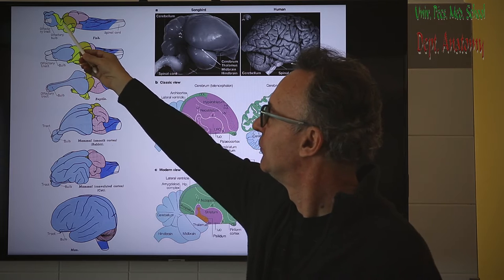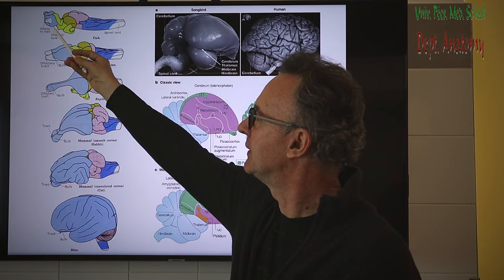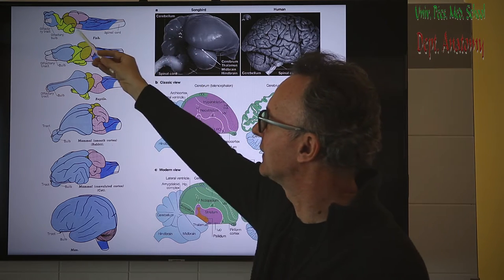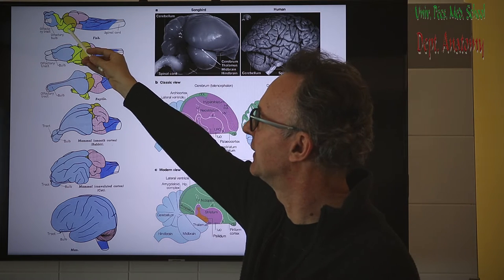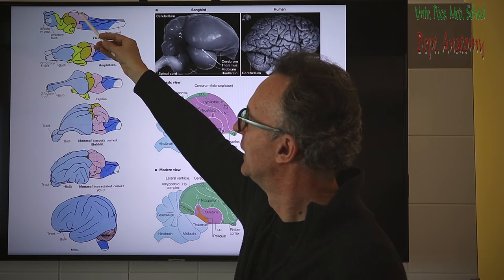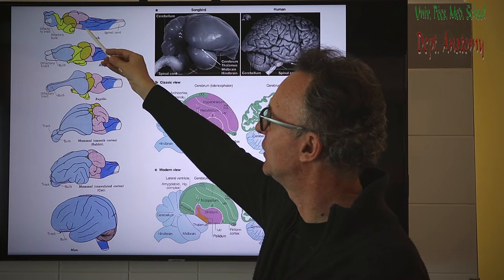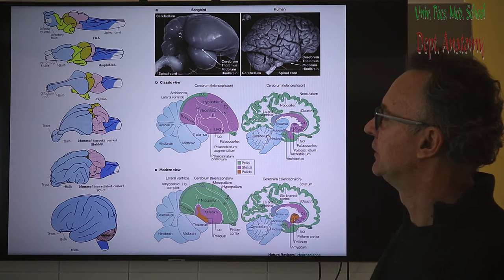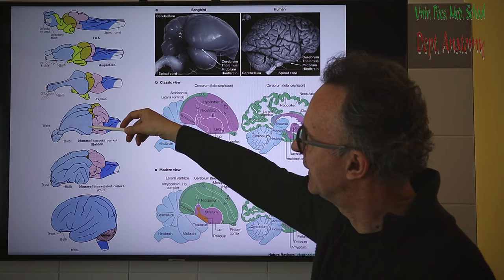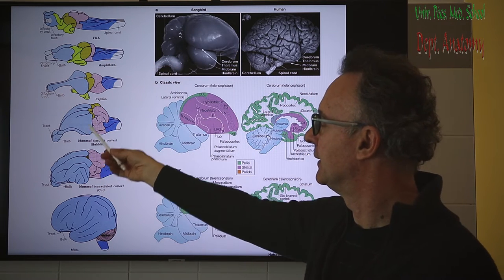In fish, for example, the telencephalon is very small, represented by the olfactory bulb, and the other brain vesicles are seen much better: the diencephalon, the mesencephalon in darker yellow, the metencephalon with the developing cerebellum in pink, and the myelencephalon, which is the medulla oblongata. The telencephalon gradually increases in dominancy and proportion.